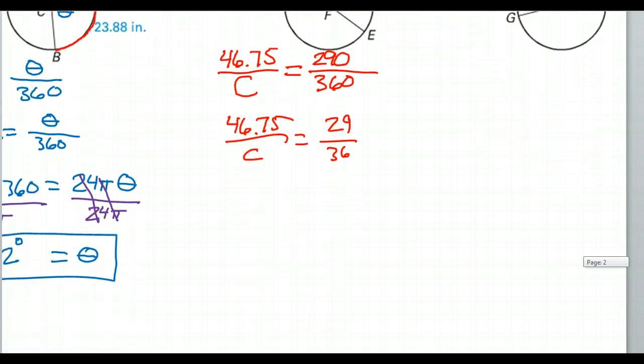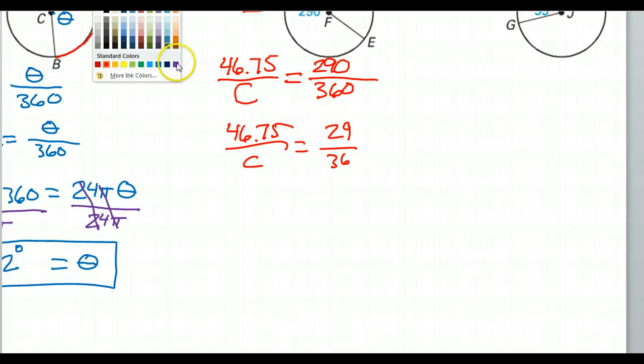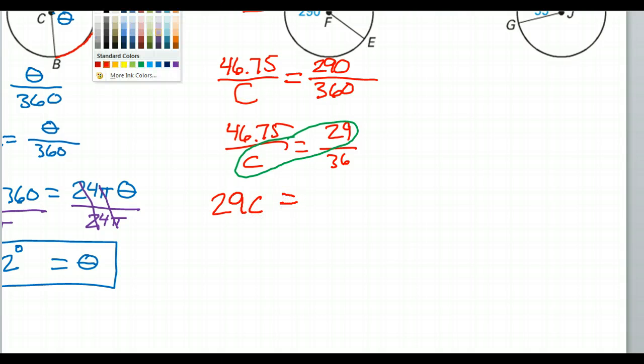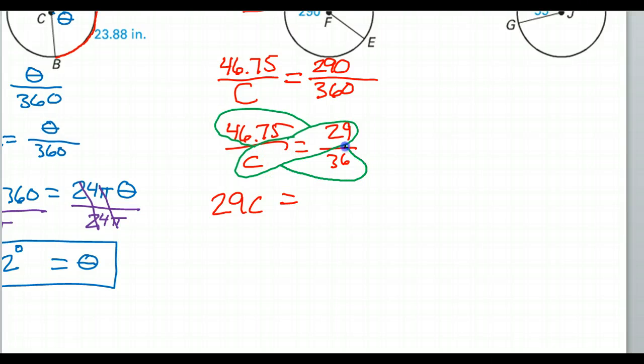Time to cross multiply. Okay, so we're going to do this action right here. And that's going to give us 29C equals, and then we're going to do this action right here. I'm going to do like I did before and I'm just going to leave this separate.